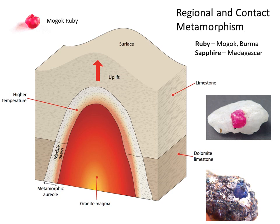Regional and contact metamorphism is a very important source of rubies and sapphires. When hot magma rises through surrounding rock, the heat and pressure it generates can transform that surrounding rock. Contact metamorphism — more precisely metasomatism — involves a chemical exchange between the magma and parent rock. Around a granite body, we get skarn formations. Regional metamorphism on a much larger scale, driven by heat and pressure, is responsible for the rubies and sapphires found in Mogok.